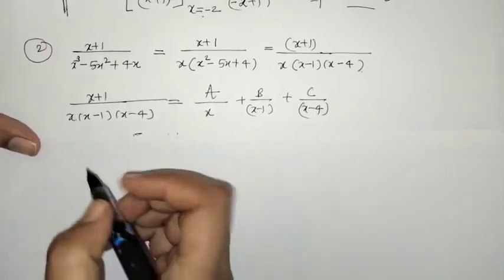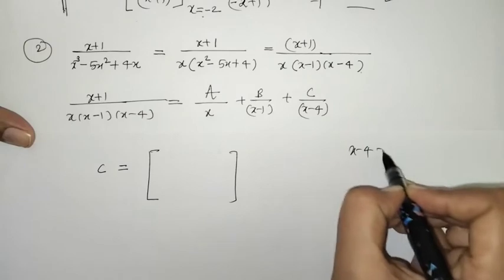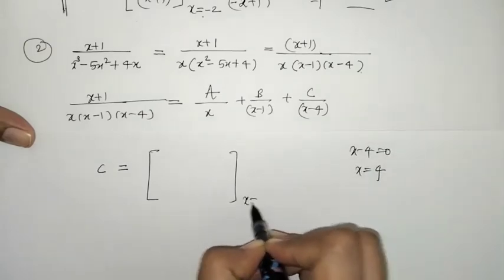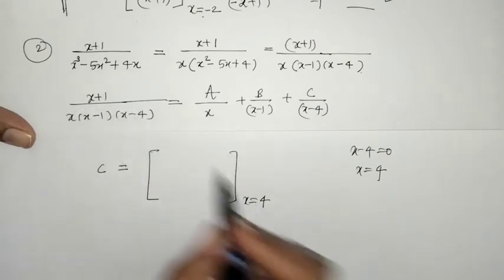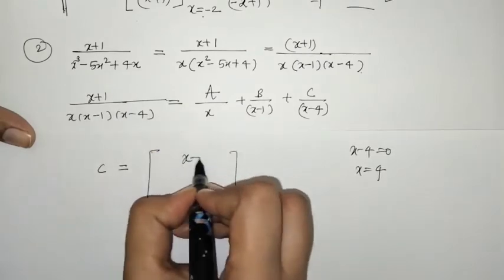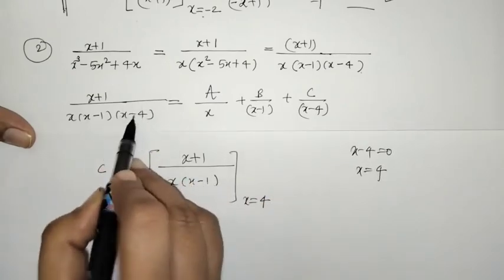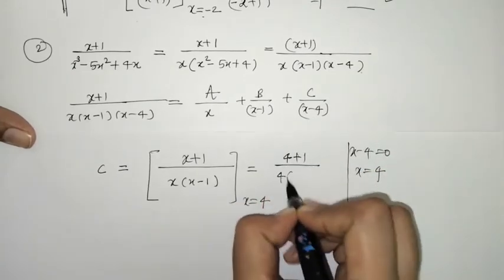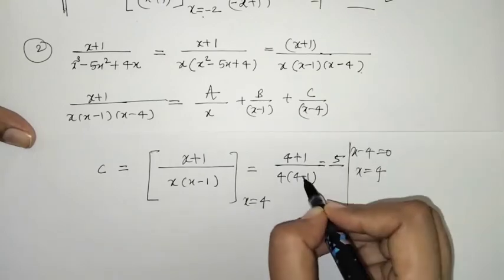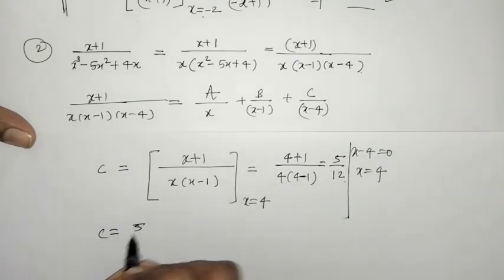To find C, put x-4 = 0, that means x = 4, eliminating the (x-4) factor. The remaining expression is (x+1)/[x(x-1)]; substituting x = 4 yields (4+1)/[4(4-1)] = 5/(4×3) = 5/12. Therefore C = 5/12.